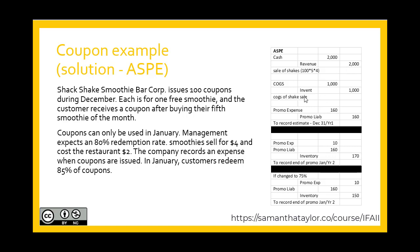Now for the promo expense related to coupons: 100 coupons times 80% redemption rate times $2 cost equals our promo expense. We debit promo expense and credit promo liability to set up the liability. Then in January, after year end, we zero out the account because the coupons can only be used in January — it's a use-it-or-lose-it situation.